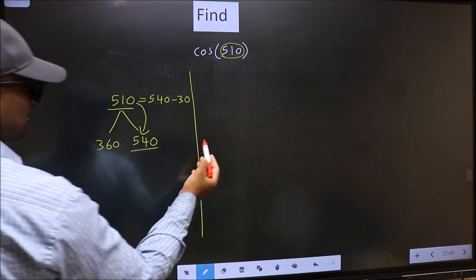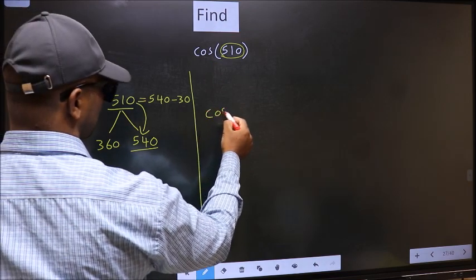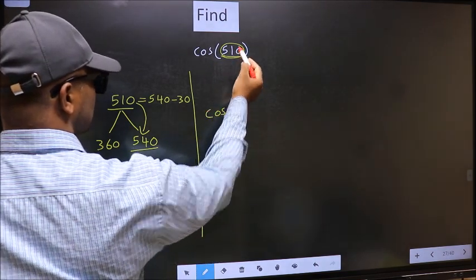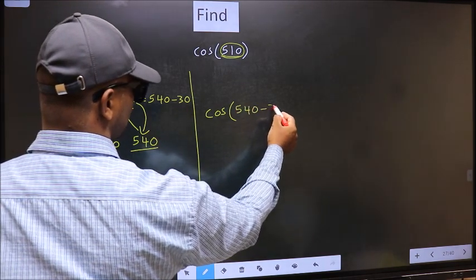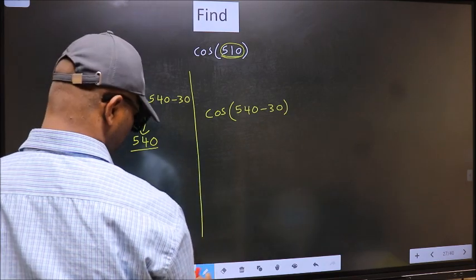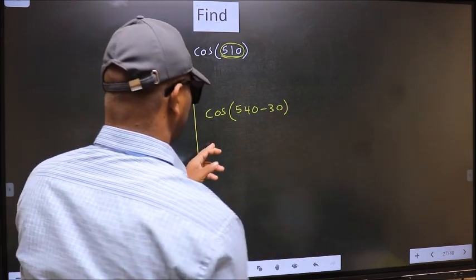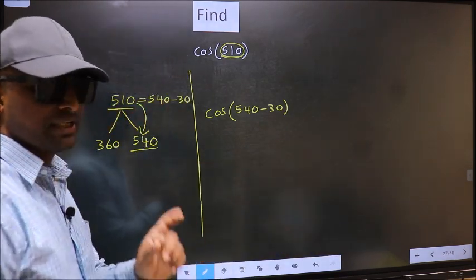So, this will become cos. In place of this, now we should write this: 540 minus 30. This is your step 1.